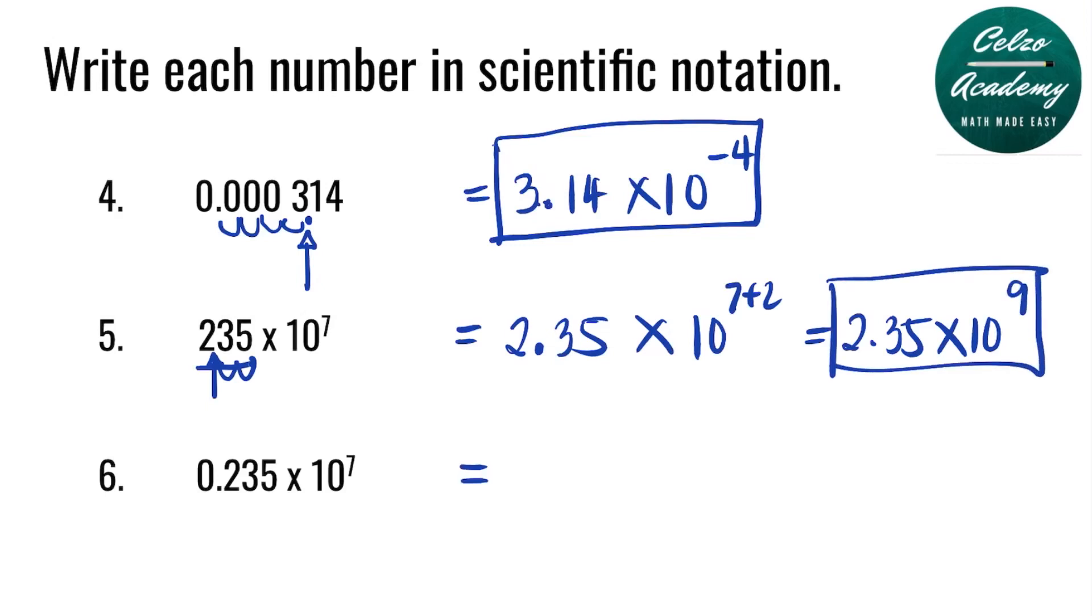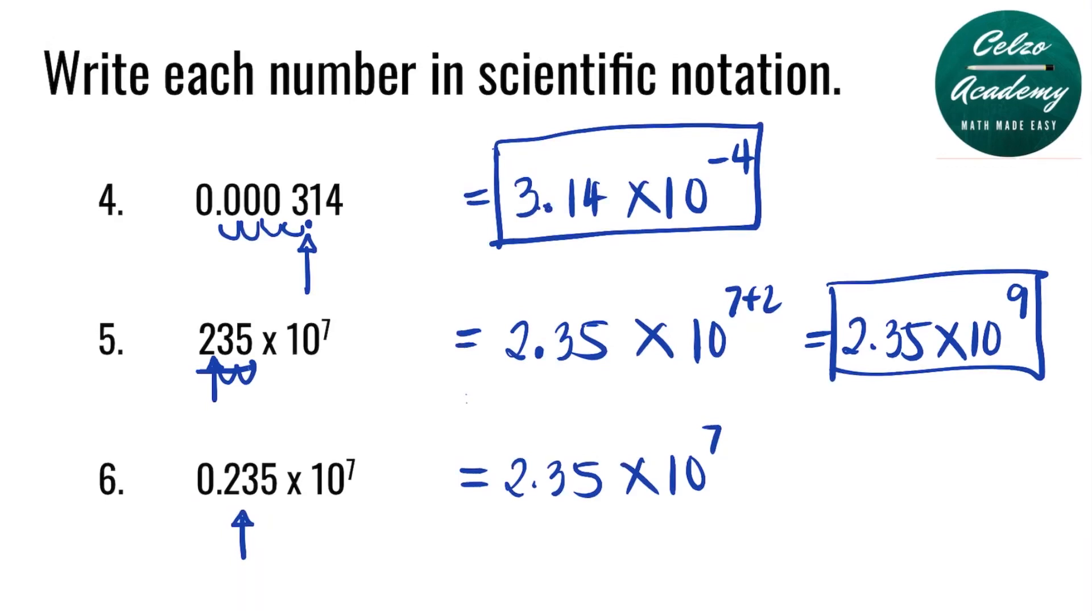For question number 6, we place the decimal point right after the 2 to make it 2.35. And what do you think will happen to the power 7? If you place the decimal point right after the 2, you have one number on the left side. So that means we need to subtract 1 from the power. So the answer is 2.35 times 10 to the power of 6.